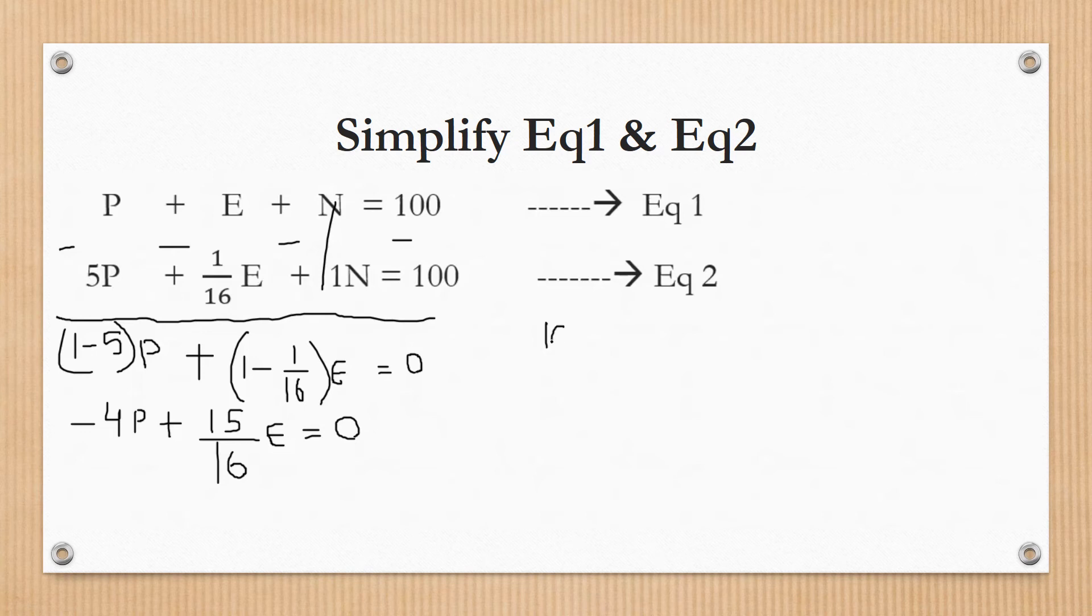Move the minus 4P to the right, so it becomes plus 4P. Keep the variable P and move 4 to the left, so it goes in the denominator. 15 divided by 16 times 4. 16 times 4 is 64, so P equals 15/64 E.